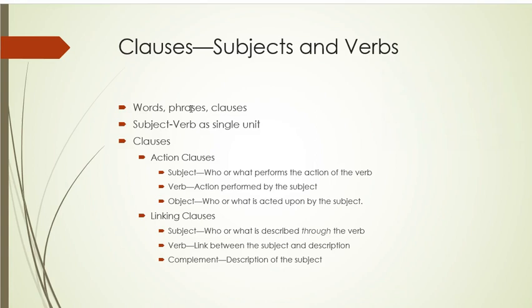You have two types of clauses. All clauses in English are either action clauses or linking clauses. It's very important to keep this straight because most of you were told that verbs are actions — but that's not necessarily so. Linking verbs are not actions. If I said 'Susie felt sick,' she didn't go out and touch the sick. She's not doing anything. That's a linking verb — I'm describing Susie as sick. 'Susie is sick,' 'Susie felt sick,' 'Susie became sick,' 'Susie seemed sick' — in all of these, she's not doing anything.